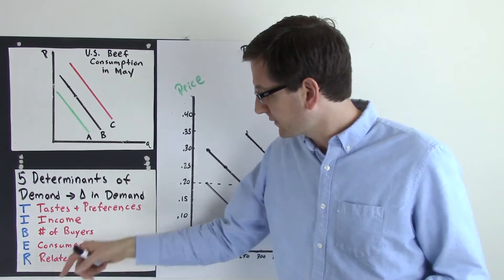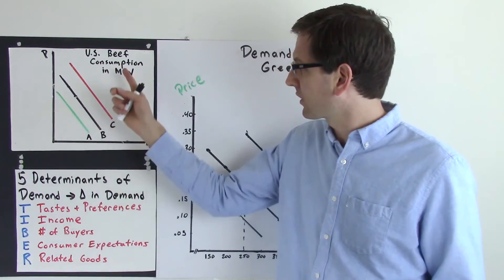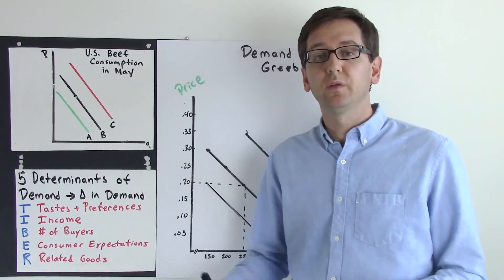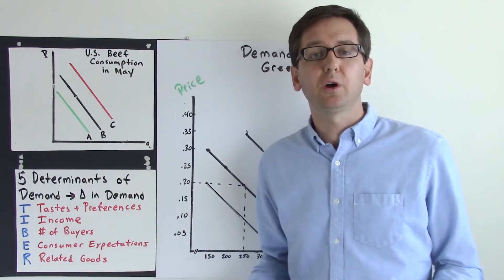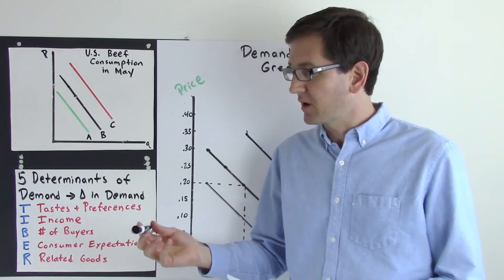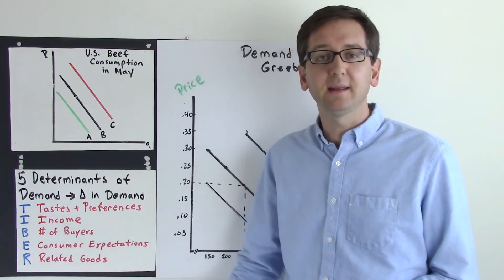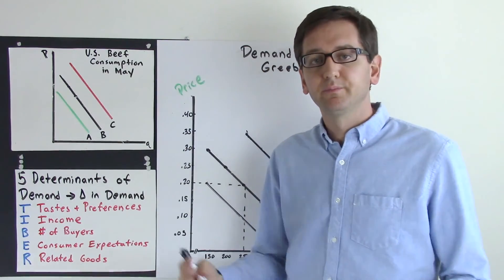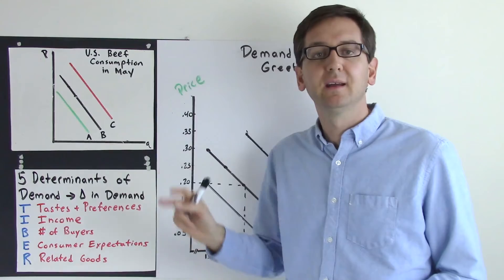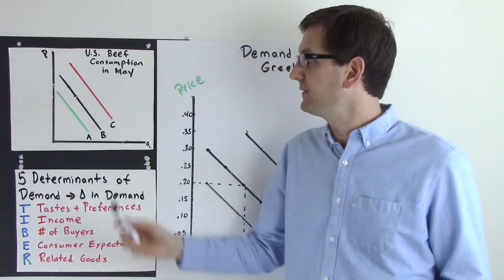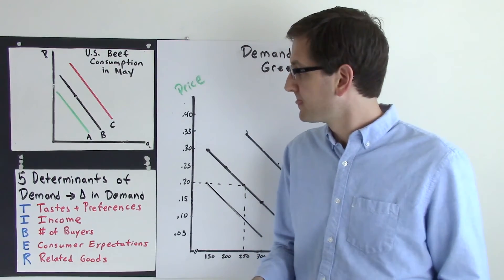For a complementary good, let's say there's a charcoal shortage. Charcoal is a complementary good that goes together with beef — many people will only cook beef on a charcoal grill. If there's a charcoal shortage and they can't find any charcoal, they may say, 'I'll just wait and not buy any beef until I can buy some charcoal.' In that case, we would see the curve shift from B to A — a decrease in demand for beef in May because charcoal, the complementary good, is in short supply.